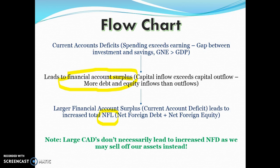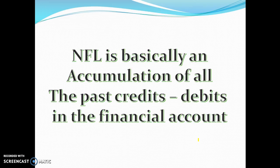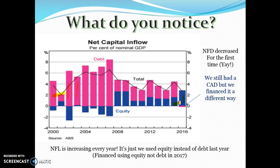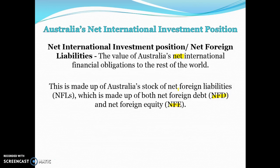Large current account deficits don't necessarily lead to increased net foreign debt, because we don't need to go into debt just because we have a CAD — we can sell off our assets instead. Last year we had a current account deficit, but net debt flows were actually positive, meaning we lent more than we borrowed. Most of the way we funded our current account was actually by selling off assets.